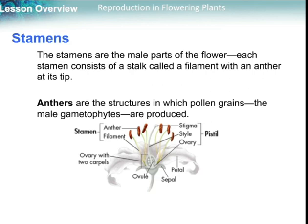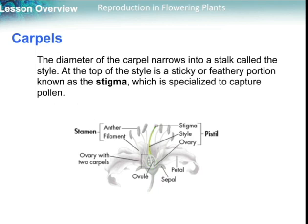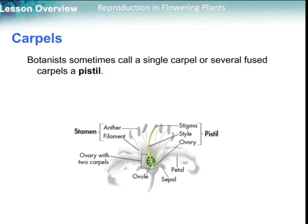On the carpel — the innermost floral part — which will produce and shelter the female gametophytes and later seeds. Each carpel has a broad base forming an ovary, which contains one or more ovules where female gametophytes are produced. The diameter of the carpel narrows into a stalk called the style, and the top of the style is a sticky or feathery portion known as the stigma, which is specialized to capture pollen. Sometimes a single carpel or several fused carpels are called a pistil.